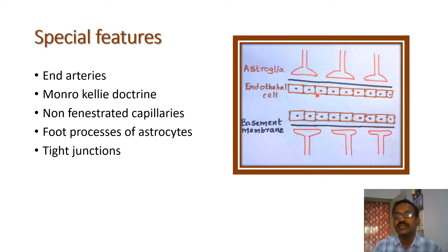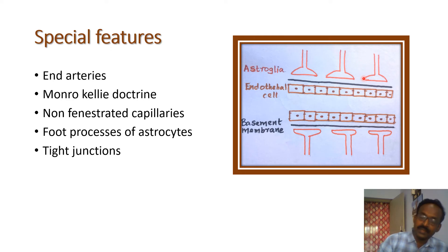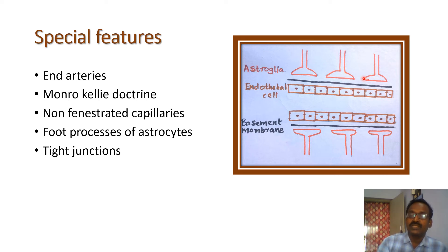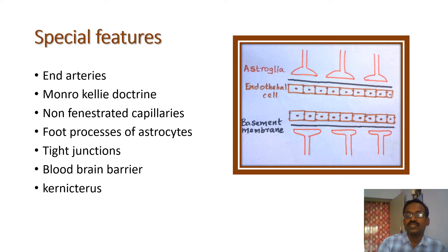Tight junctions are also present between the endothelial cells. The blood-brain barrier is important for preventing the transport of toxic substances from the blood to the brain, and also prevents neurotransmitters produced in the brain from entering the general circulation. However, the blood-brain barrier is not well developed in infants. So bilirubin, as in hemolytic jaundice, can cross into the brain, causing deposition in the basal ganglia and producing kernicterus in infants.